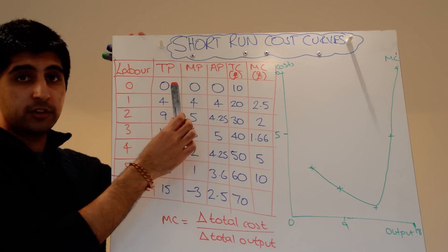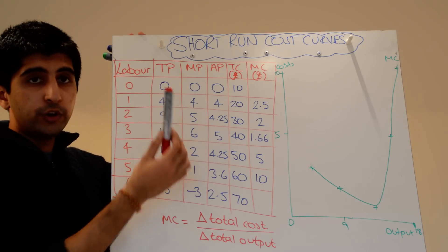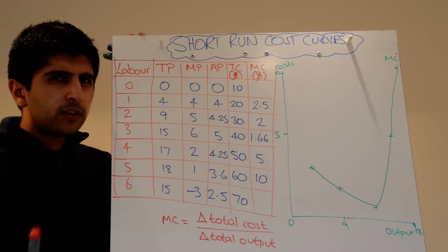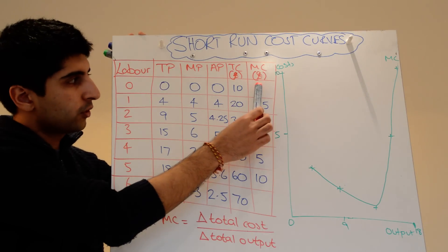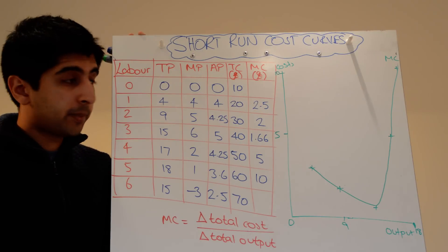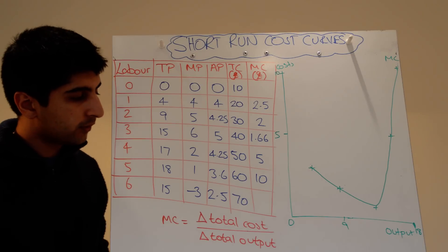As we expand production from zero to four units, what do those four units cost us? The marginal cost of going from zero to four is £2.50. That's what the marginal cost tells us.